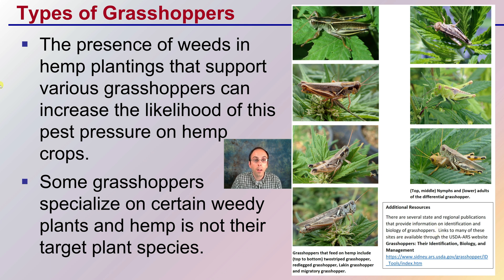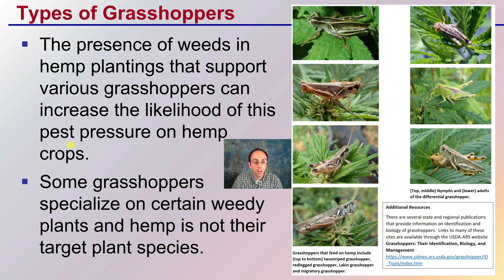The presence of weeds and hemp plantings that support various grasshoppers can increase the likelihood of pest pressure on hemp crops. Managing the area and local weeds is important to reduce their population so they're less likely to jump to the cannabis plants. Some grasshoppers specialize on certain weedy plants and hemp is not their target plant species, so hopefully they'll just be a graze feeder and a nuisance rather than leading to complete crop failure.